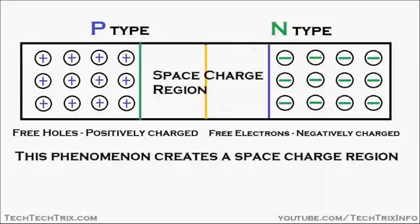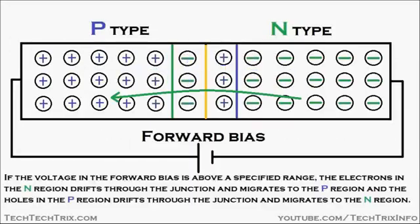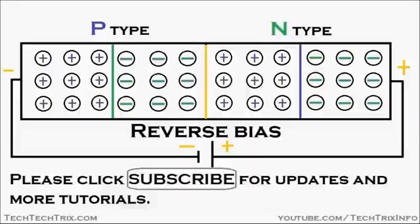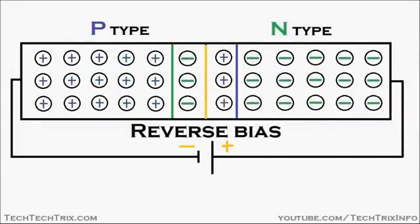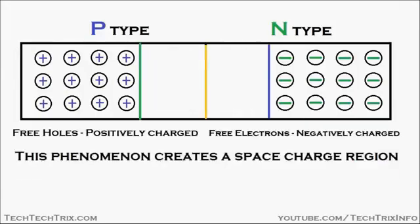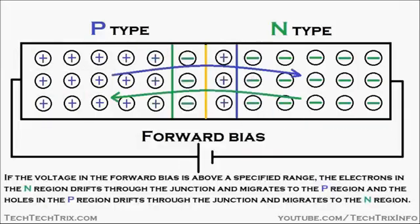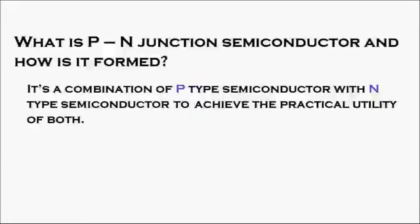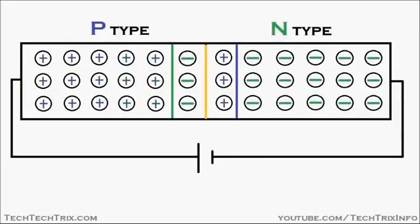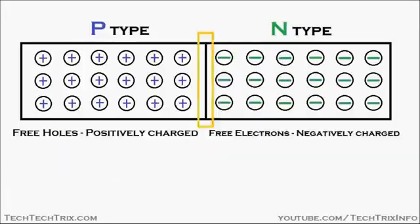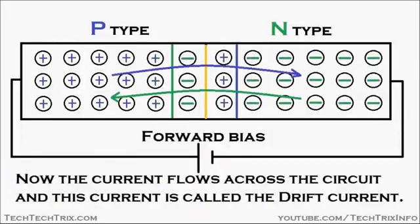This tutorial animation covers how a PN junction semiconductor works, what is forward bias and reverse bias, what is diffusion current and drift current, and what is avalanche breakdown.